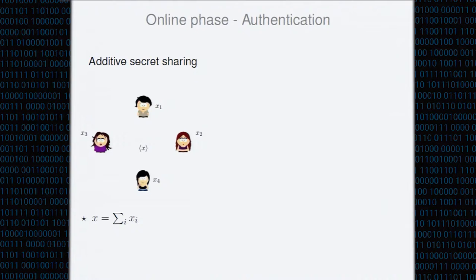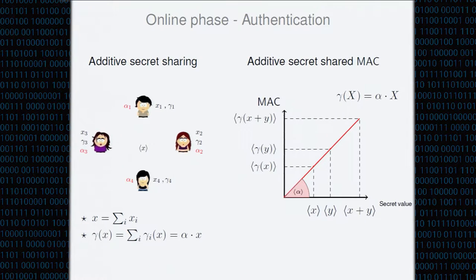To ensure privacy in the dishonest majority setting we can use an additive secret sharing scheme, so each value in the online computation is secret shared such that each party holds a share with the constraint that the sum of shares equals the value. Privacy is not an issue because even a set of n minus one corrupted parties cannot recover the value. To ensure correctness, one possible solution is to use a message authentication code. We denote by γ the MAC, and given a value x that is additively secret shared, a MAC on x is given by the product α·x, where α is the global key — it doesn't depend on the value but is fixed throughout the protocol. Both the MAC and the global key α are additively secret shared, so they are unknown to the parties.